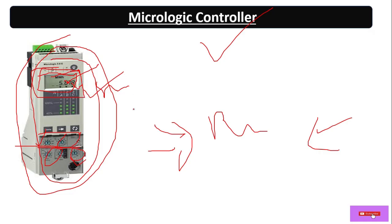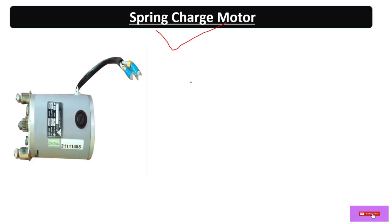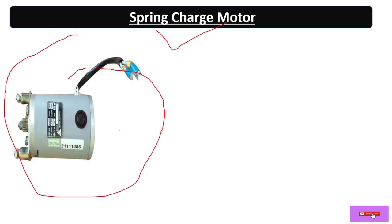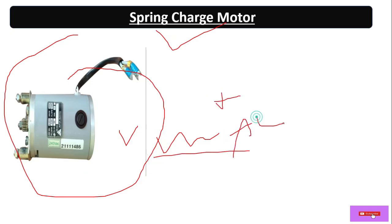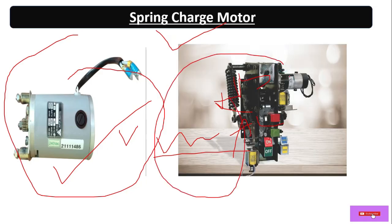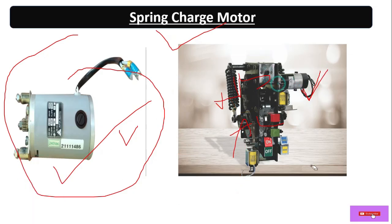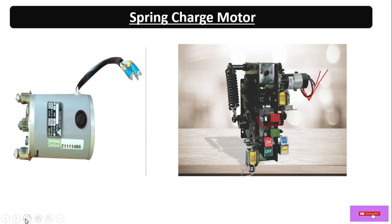On this display we can monitor the values during a visit to the LT panel or breaker. Another part is the spring charge motor — this is a universal motor that can operate on both AC and DC. This spring charge motor provides the necessary tension; the moving contact always requires the spring to be charged.